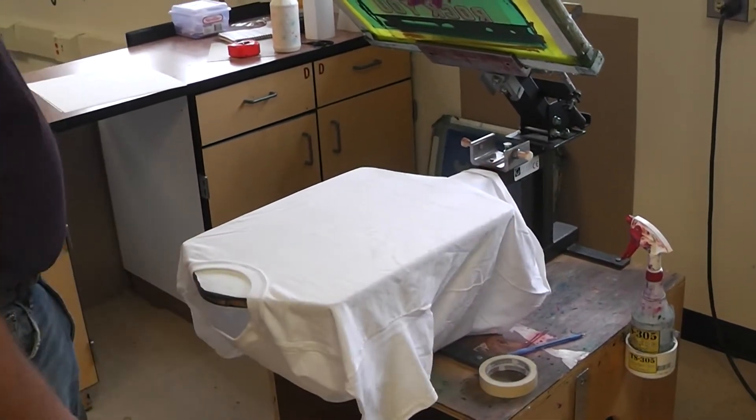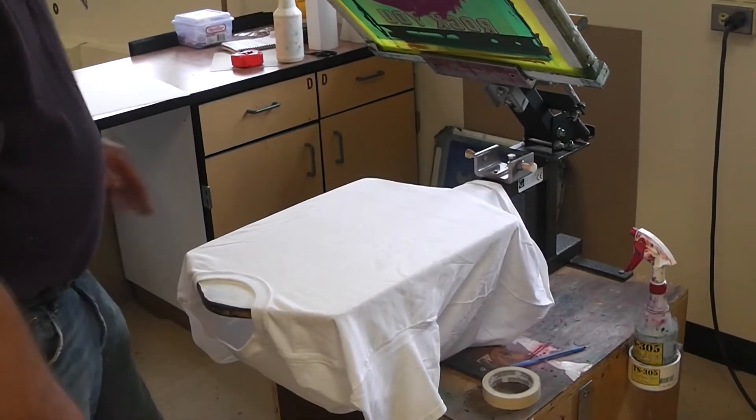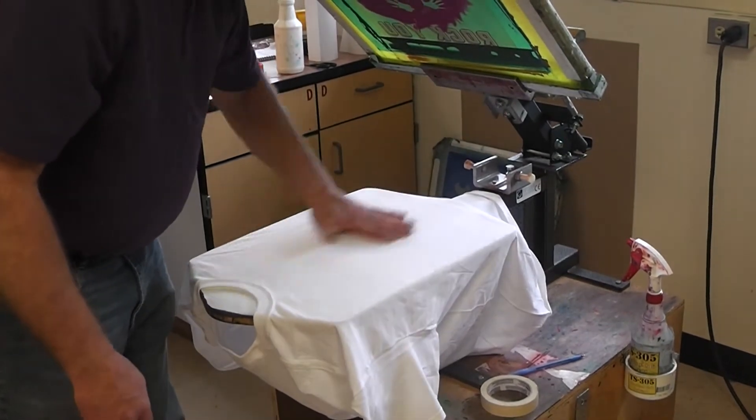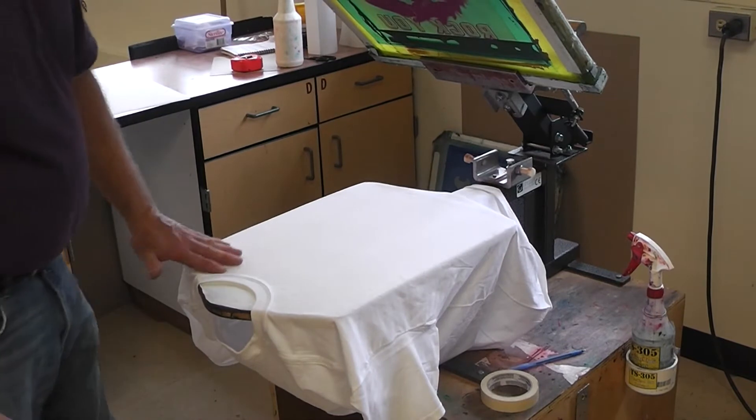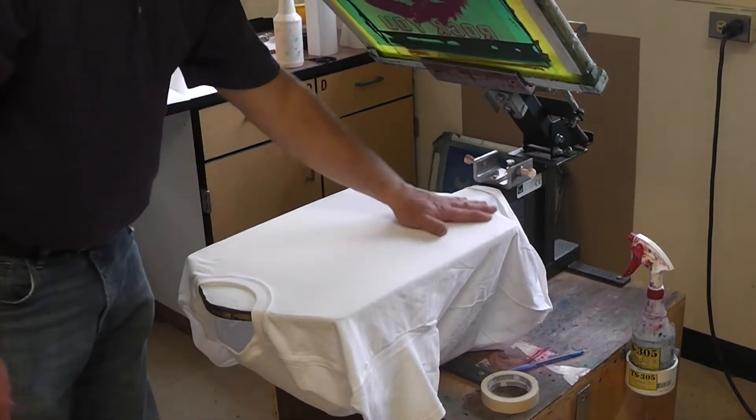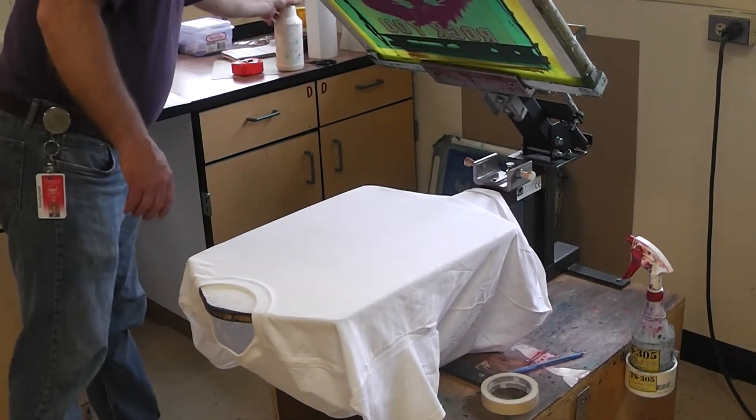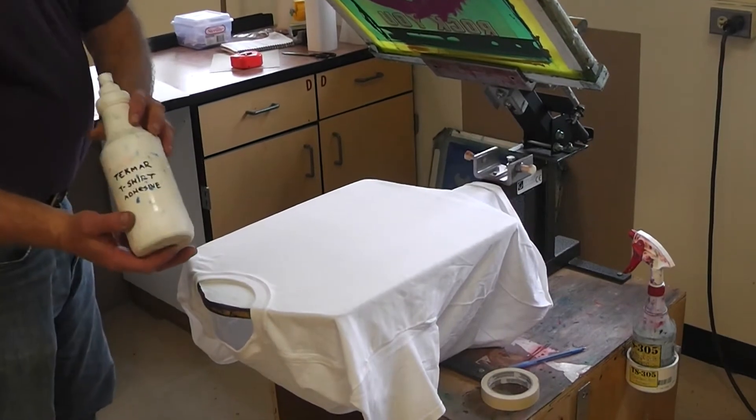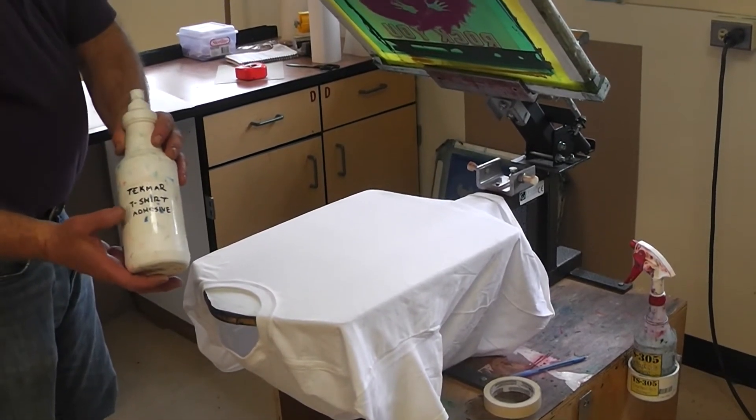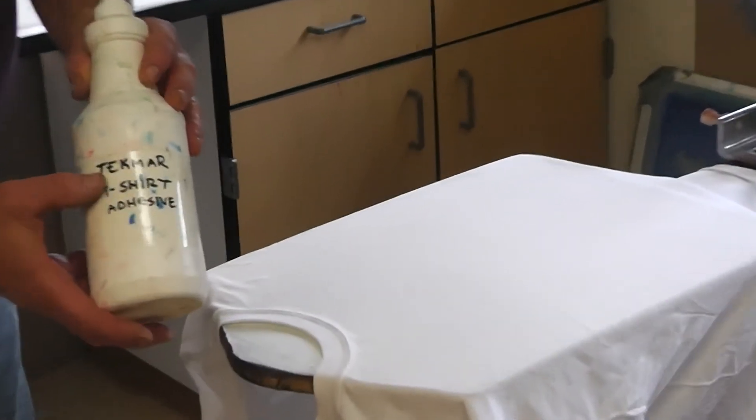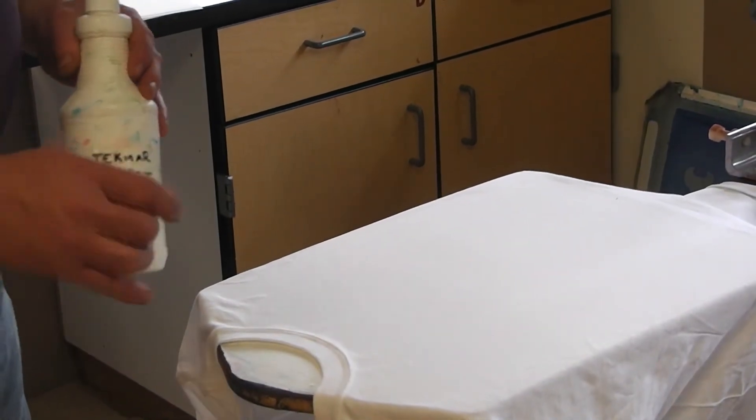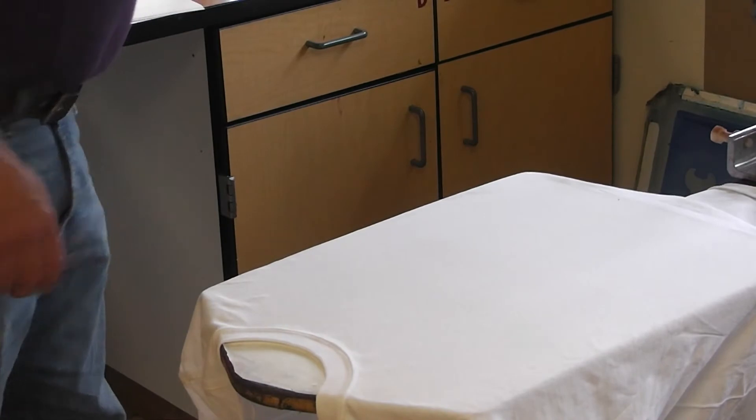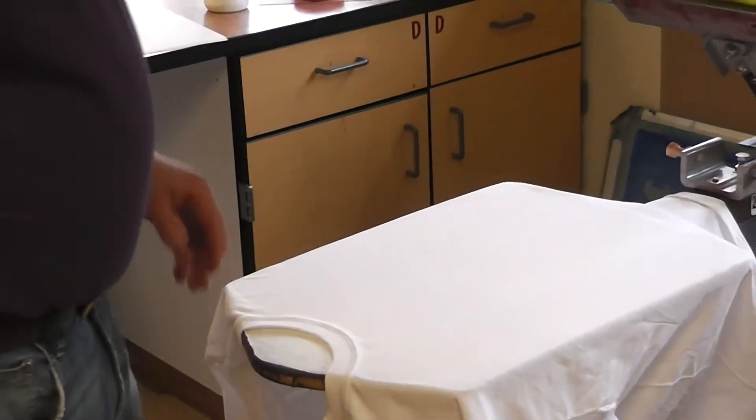So, I'm centered. I'm at the height that I want. Now, I can flatten the shirt out with my hand so that it doesn't move. The platens on the t-shirt presses have some glue on there. If your platen doesn't feel tacky, ask your teacher and they'll add some t-shirt adhesive to it so the shirt does not move. That is a must for a quality print.